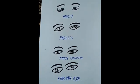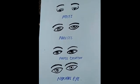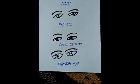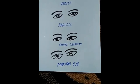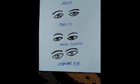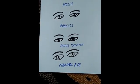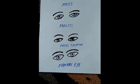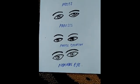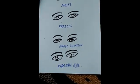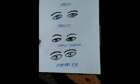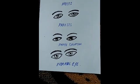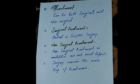Paresis is the weakness of the eye muscles — the patient is unable to move their eyes properly. Pupil dilation means the pupil becomes dilated. You can see the difference in the images shown between normal and affected eyes.